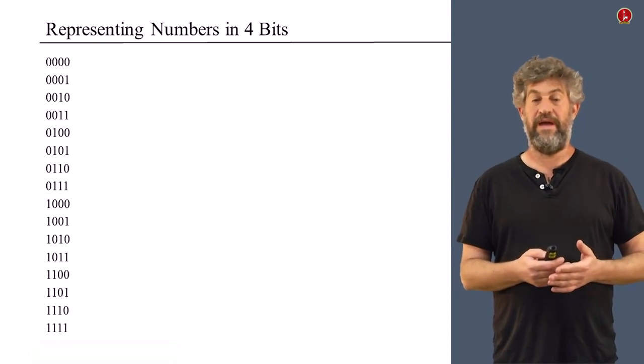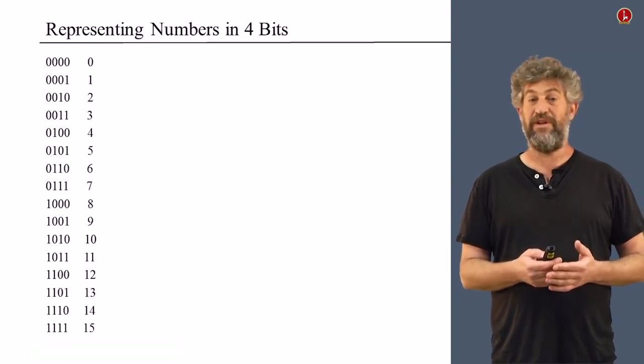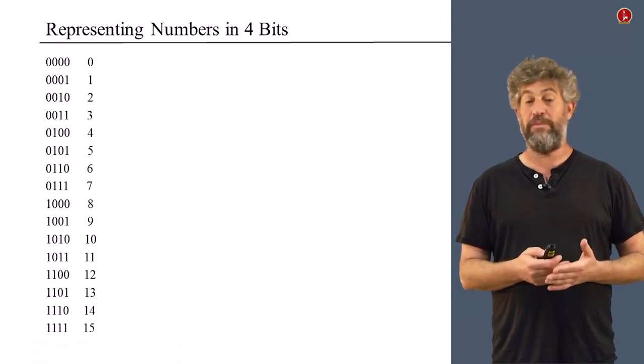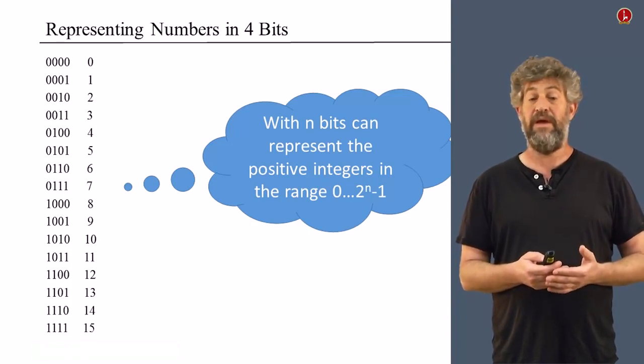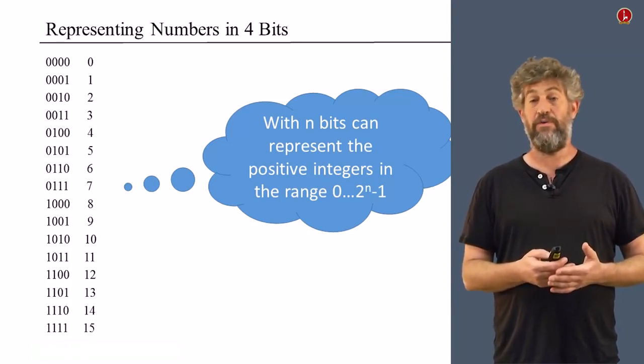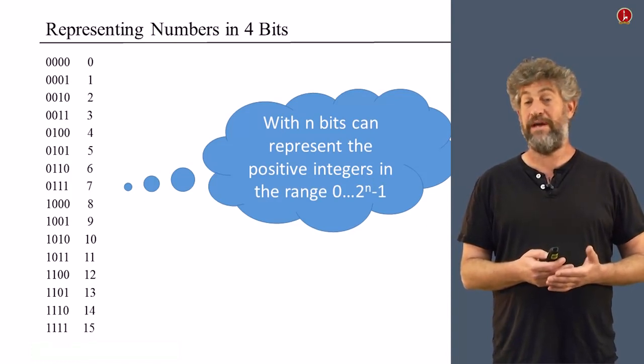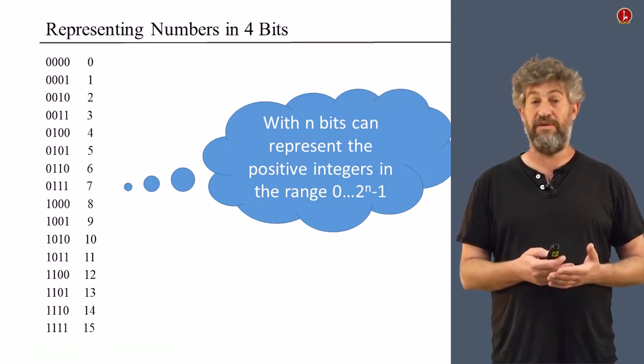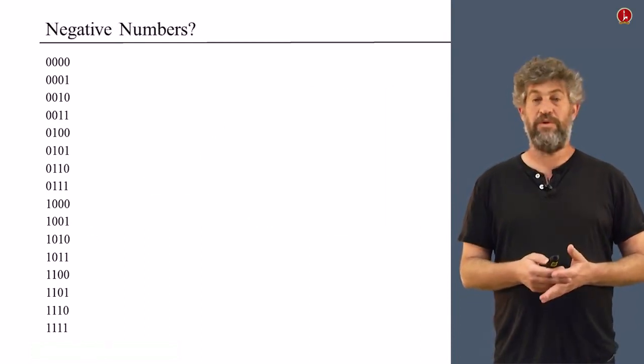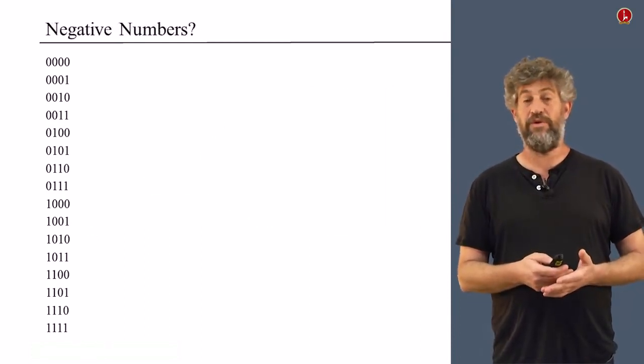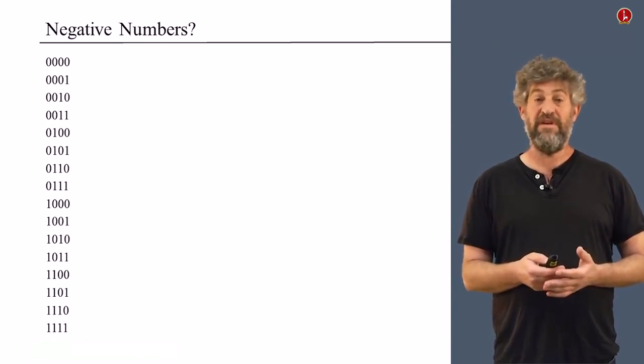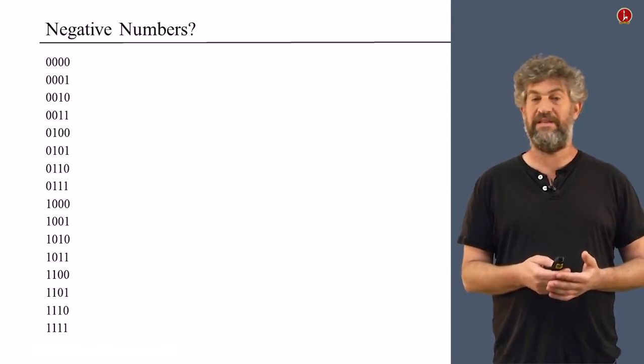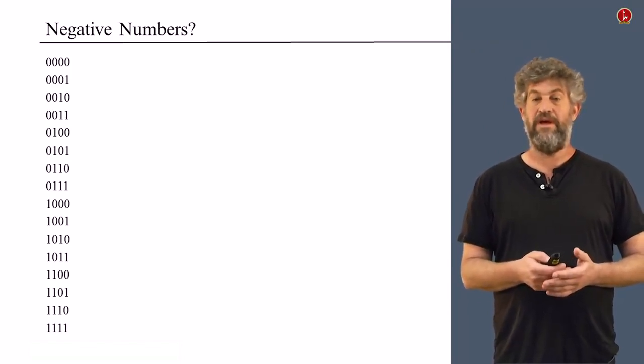Let's take for example, the case of four bits. We know there are 16 possible values there. What we've done so far, we represented the integers between 0 and 15, all 16 of them, using the four bits. If we want to represent negative numbers, we will need to give up part of these 16 possibilities in order to represent negative numbers. So maybe 8 of them will be positive and 8 of them will be negative.